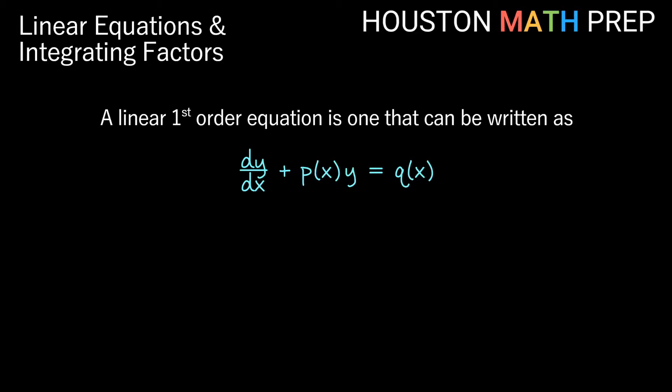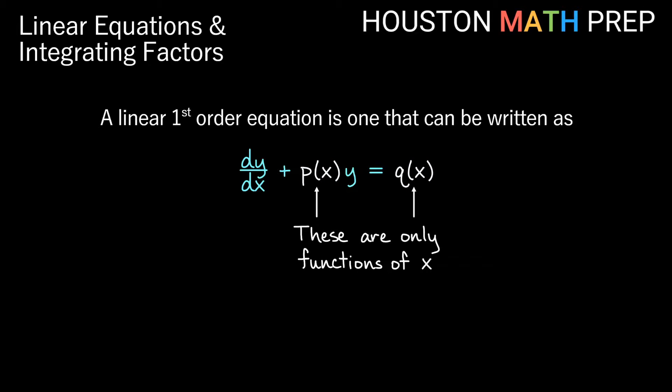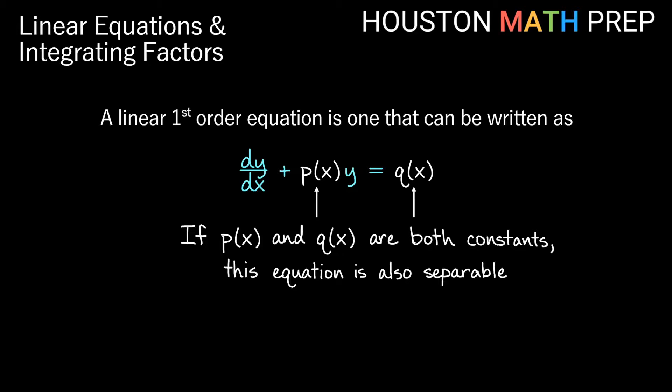A linear first order equation can be arranged as dy/dx or y' plus some function of x times y equals another function of x. The only y term appears in that form, and p(x) and q(x) depend at most on x — there are no y terms in these. It's also possible that p and q could just be constants.